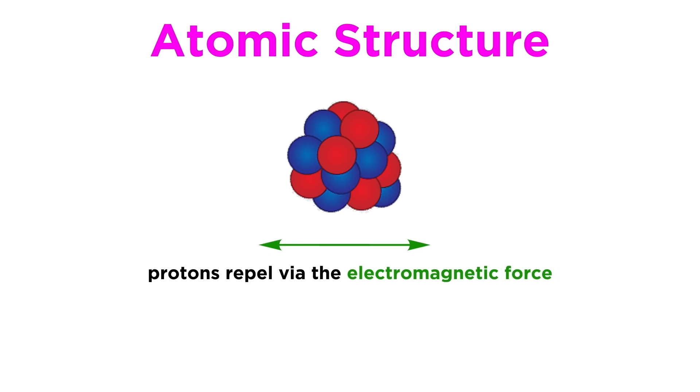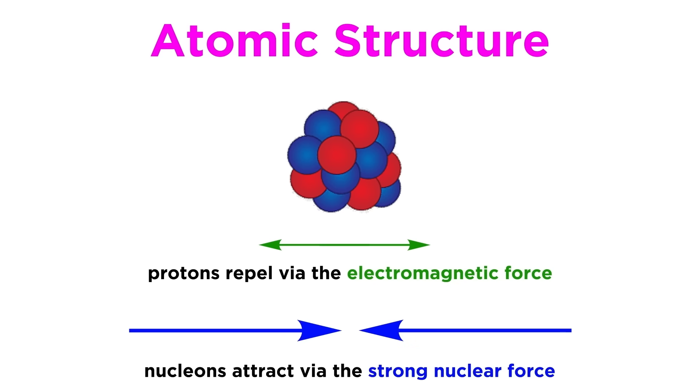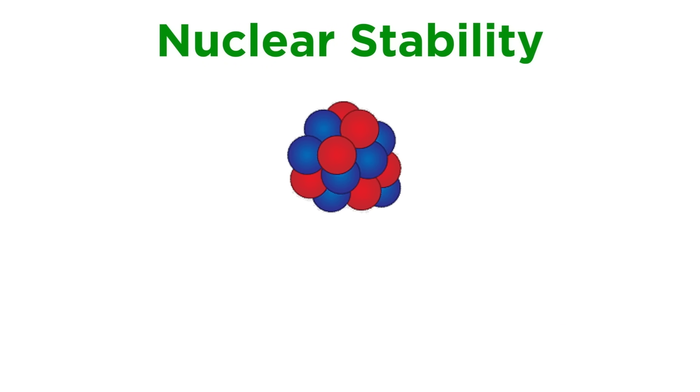While the electromagnetic force dictates that the positively charged protons will be repelling each other, since like charges repel, it is the much stronger and aptly named strong nuclear force that attracts and binds all nucleons and makes the nucleus stable. However, some nuclei will be unstable. This can occur for various reasons, so this begs the underlying question: what is it that dictates nuclear stability?